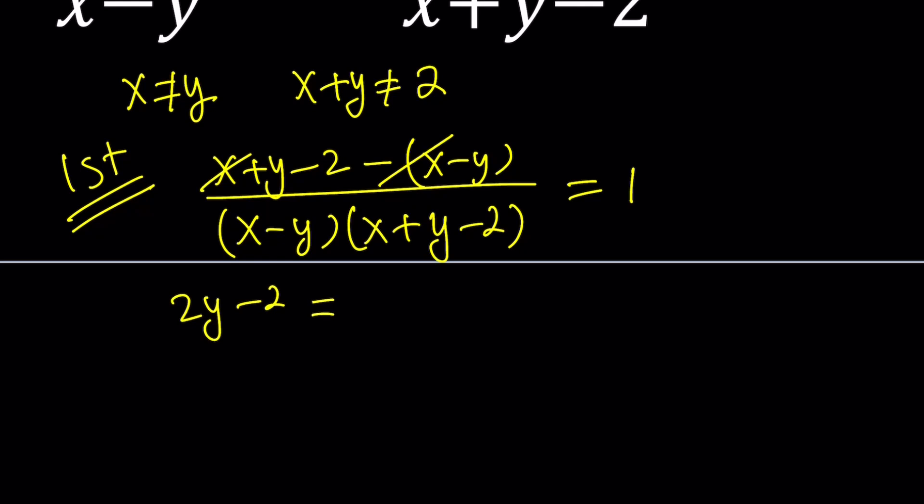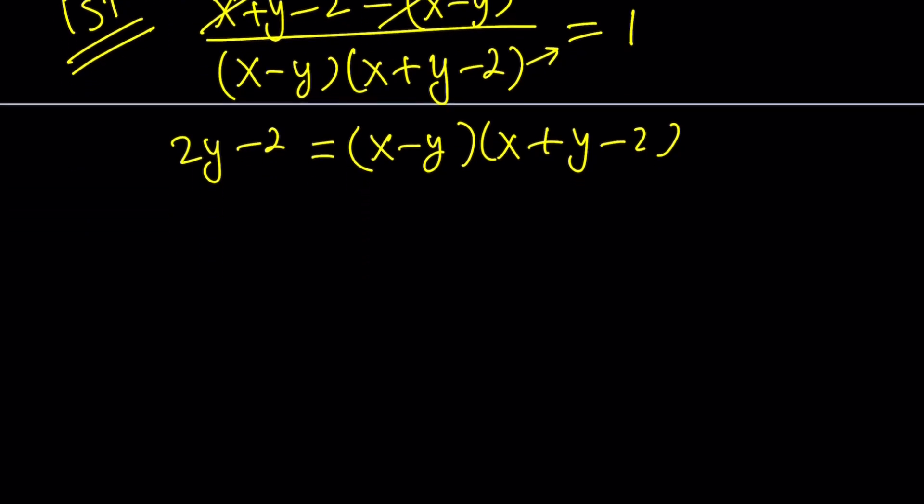And then we can go ahead at this point and cross multiply. And this is going to give us x minus y times x plus y minus 2. Because it's multiplied by 1, it's just going to be the same thing. Now, the right-hand side looks more complicated. So let's go ahead and put that on the left-hand side while distributing it. I'm going to multiply this by that as a quantity. Remember, that's the difference of two squares. And then I'm going to multiply the x minus y by negative 2.